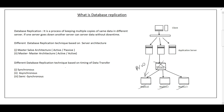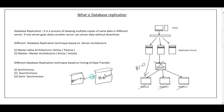Suppose we have two databases — a primary DB and a replica DB. How do we sync the data between them? Based on how we sync from primary to replica, we have three types: synchronous, asynchronous, and semi-synchronous.